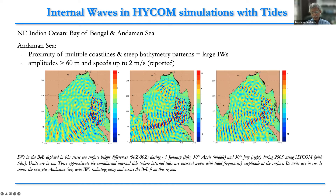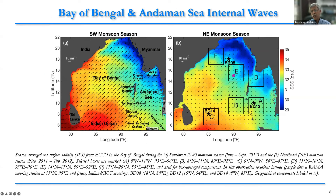One branch goes towards Sri Lanka and another branch goes towards the ICTOL region. Based on this initial work, we identified six boxes — A, B, C in the Southern Bay of Bengal and D, E, F in the Northern Bay of Bengal. I also want to point out that in the NMNC, there is the 10-degree channel and the 6-degree channel — these two channels play a major role in internal wave propagation.